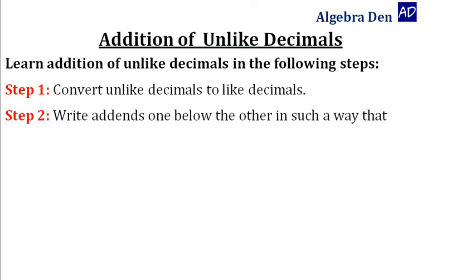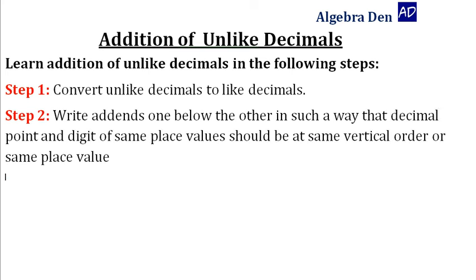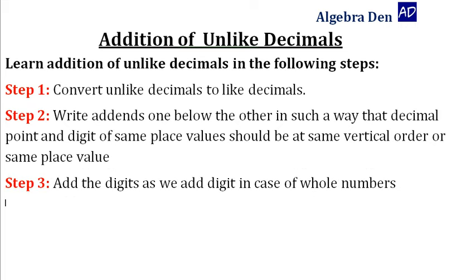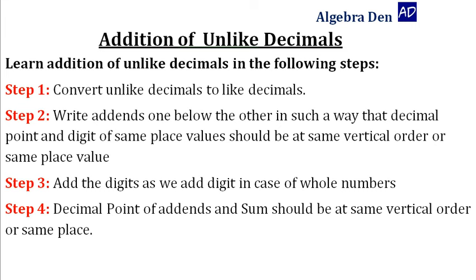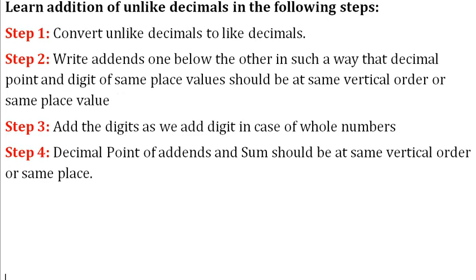Step 2: Write addends one below the other in such a way that the decimal point and digits of the same place values are at the same vertical order. Step 3: Add the digits as we add digits in the case of whole numbers. Step 4: The decimal point of the addends and the sum should be at the same vertical order or same place.